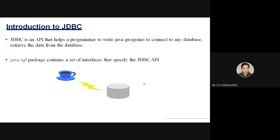JDBC is an API. API stands for Application Programming Interface — it comprises a set of classes and interfaces which allow your Java program to connect to and interact with the database. The main advantage of JDBC is it can be used to connect to any database. JDBC provides a database-independent API, so you can connect to Oracle, MySQL, MS Access, Sybase, or any database using this JDBC API.